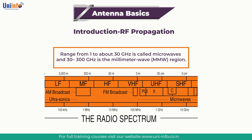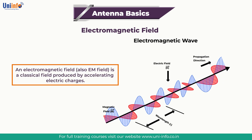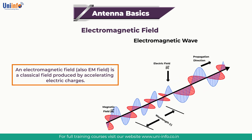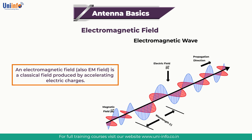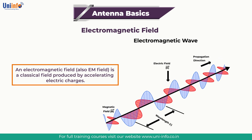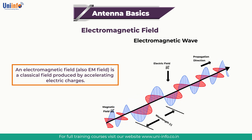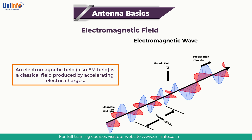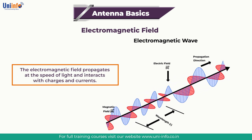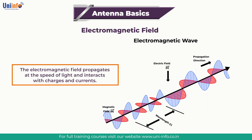Our next topic is Electromagnetic Field. An electromagnetic field, also called EM field, is a classical, non-quantum field produced by accelerating electric charges. It is the field described by classical electrodynamics and is the classical counterpart to the quantized electromagnetic field tensor in quantum electrodynamics. The electromagnetic field propagates at the speed of light. In fact, this field can be identified as light and interacts with charges and currents.